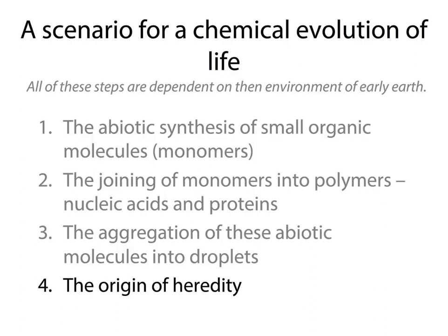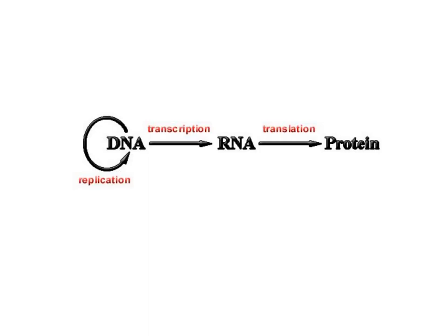Last but not least, we have the origin of heredity. Title this in your notes: the central dogma of DNA. DNA can be replicated to make more DNA. DNA also goes through the process of transcription to make RNA. Then RNA goes through the process of translation to make proteins. The question is, how in the world did this evolve? How did this happen? We're trying to piece together how life as we know it came about, and this is very much a part of all life as we know it.